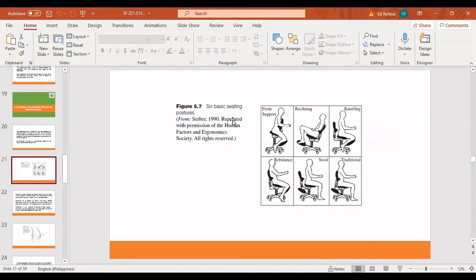This is the six basic seating postures. The first one is the front support so you could see there that there's actually a frontal here. That's why it's called front support because it actually supports your front body while you are working. And next would be the reclining. It is obvious here that the operator is actually reclining on the chair. And the next is the kneeling part. In this part, the operator is also kneeling like you can see on his knee. And the next one is the rebalance. It is actually a seating posture where you can be balanced. And the next one would be the stool. It's like sitting on a stool. This is actually the posture of it. And the last one would be traditional. Traditional is the most common one since most of us kind of sit like this.